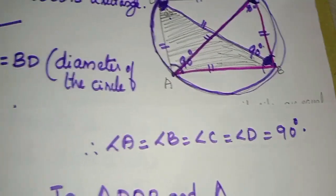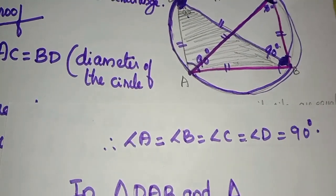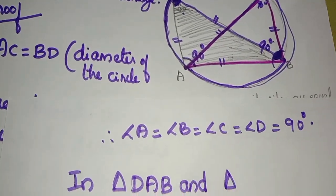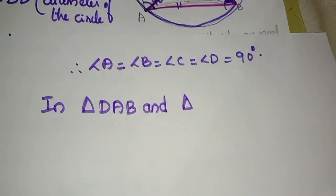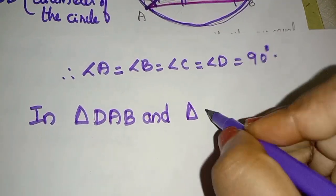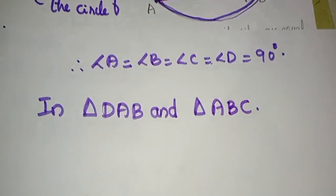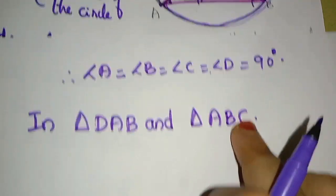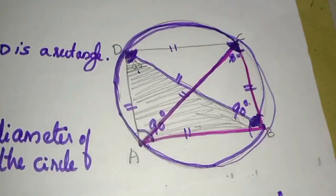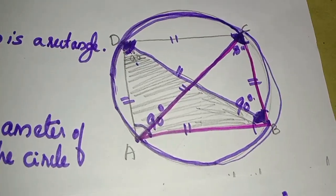Then we will choose the right triangles. Triangle ABC. This is congruent; we have three conditions.